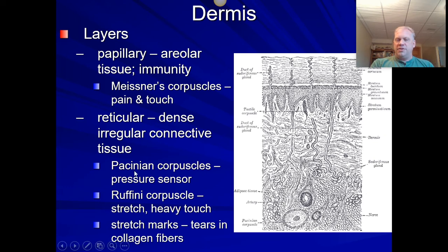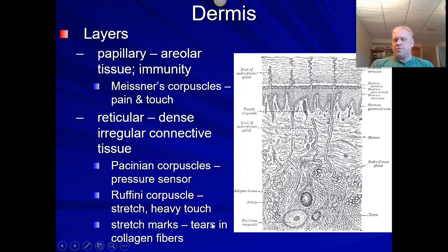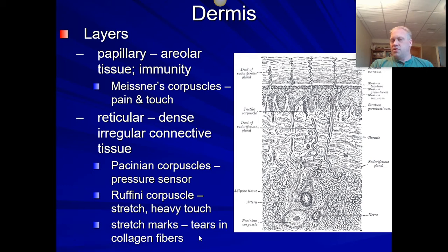Both the papillary and reticular layers contain collagen fibers as well as elastic fibers, since they're both fibrous connective tissue. When you get stretch marks, something is happening underneath — muscles, fat tissue, or whatever is growing and changing too quickly, making tears in those collagen fibers. This leaves scars deep in the dermis. If it were up in the epidermis, no worries — it gets pushed to the top — but remember, there are no fibers in epithelial tissues; fibers are down in the connective tissues.